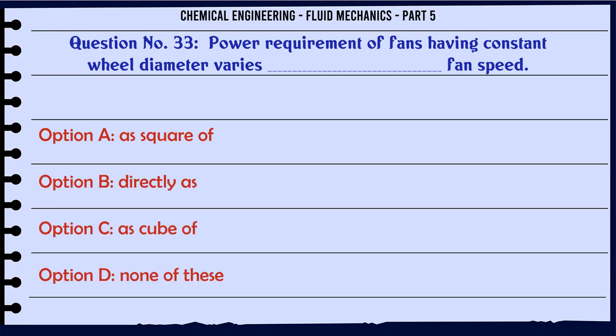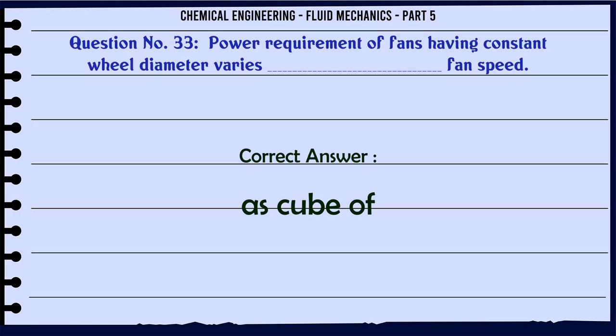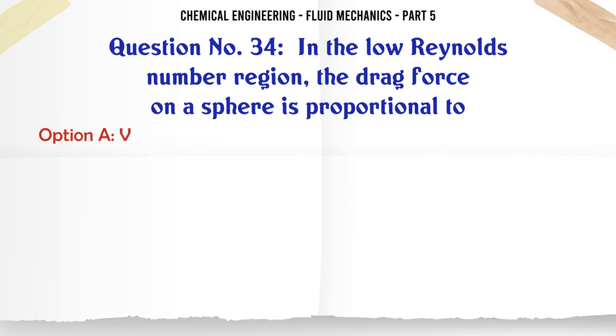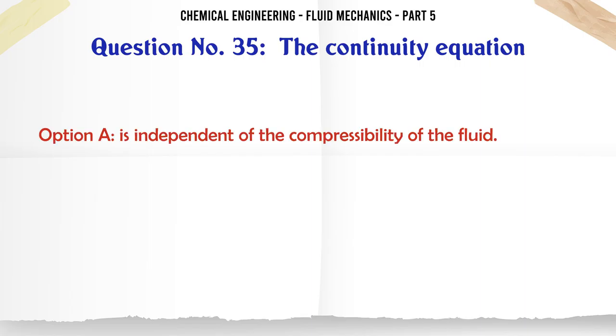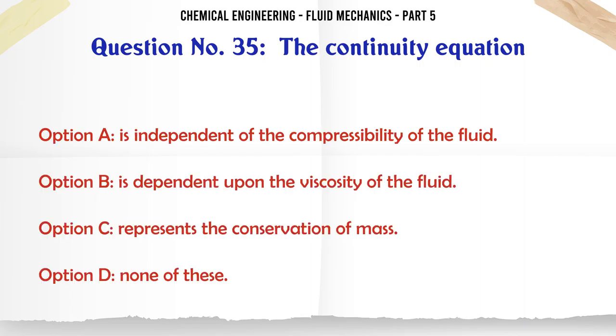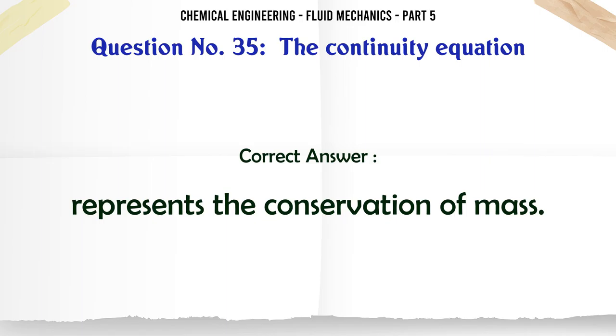Power requirement of fans having constant wheel diameter varies fan speed: a) as square of, b) directly as, c) as cube of, d) none of these. The correct answer is as cube of. In the low Reynolds number region, the drag force on a sphere is proportional to: a) v, b) v², c) v⁴, d) v^0.5. The correct answer is v. The continuity equation: a) is independent of the compressibility of the fluid, b) is dependent upon the viscosity of the fluid, c) represents the conservation of mass, d) none of these. The correct answer is represents the conservation of mass.